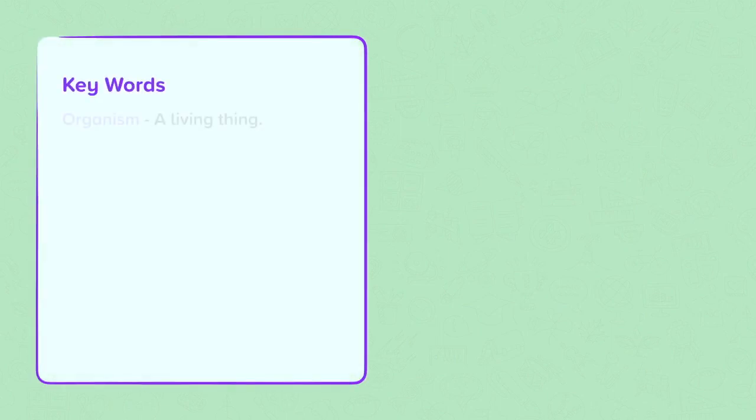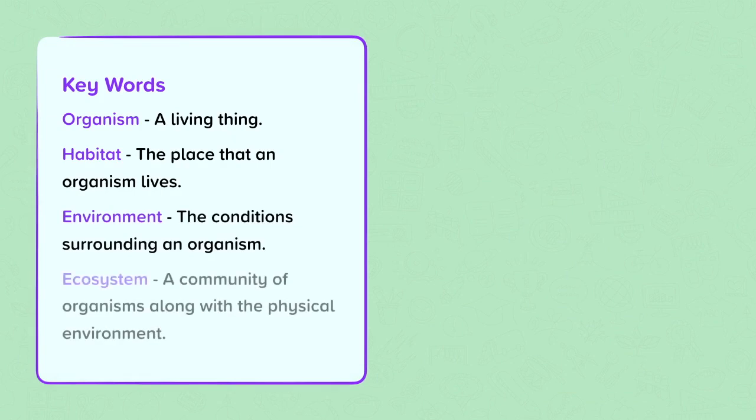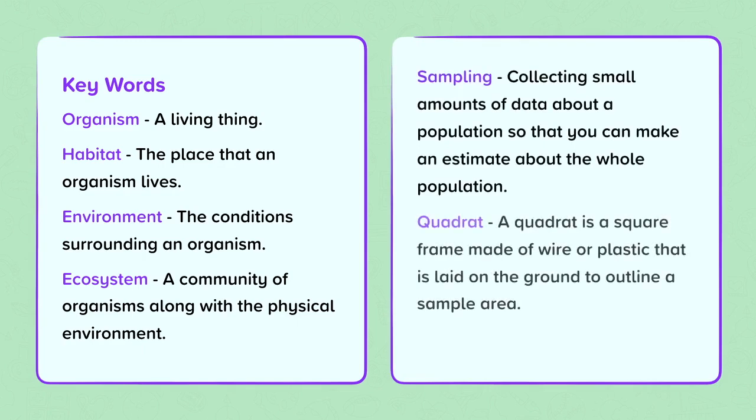Keywords. Organism: A living thing. Habitat: The place that an organism lives. Environment: The conditions surrounding an organism. Ecosystem: A community of organisms along with the physical environment. Sampling: Collecting small amounts of data about a population so you can make an estimate about the whole population. Quadrat: A quadrat is a square frame made of wire or plastic that is laid on the ground to outline a sample area. Accurate: Close to the true value.